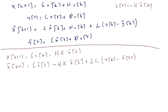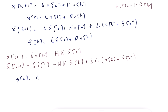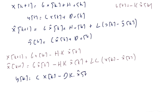We also have the output equation. Y(K) = C·X(K) + D·U(K), and substituting U(K) = -K·X-hat(K), we get Y(K) = C·X(K) - D·K·X-hat(K).